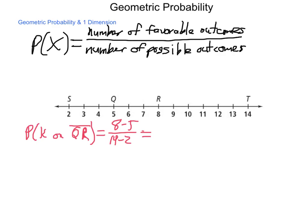8 minus 5 gives us 3, 14 minus 2 gives us 12, and then we simplify our fraction. So 3 twelfths is 1 fourth. We have a 1 in 4 chance, or 25% chance, that K is going to be placed on this interval between Q and R.